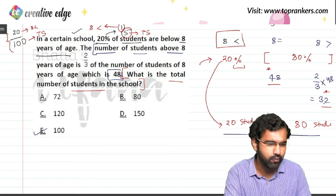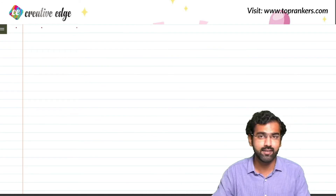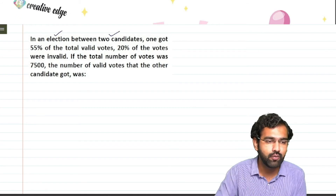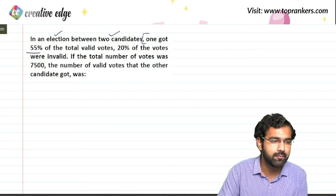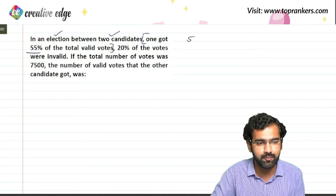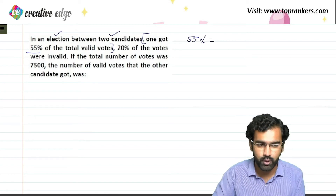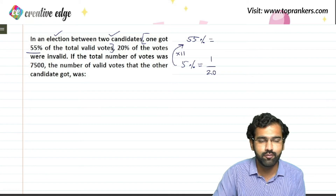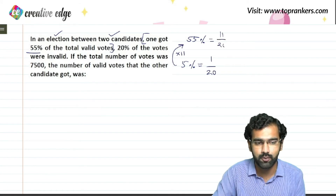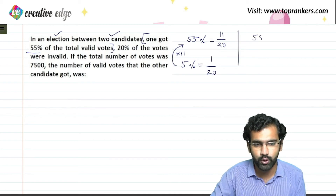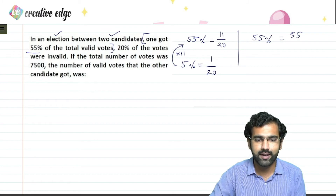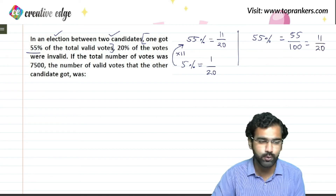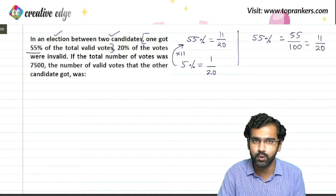Let's understand percentages better with one more example. In an election between two candidates, one got 55% of the total valid votes. If you are not able to crack 55%, treat 5% as 1/20. So 55 is 11 times of 5%, meaning 55% can be written as 11/20. Alternatively, write it as 55/100, divide both by 5, and you get 11/20. That is how you convert 55% into a fraction.